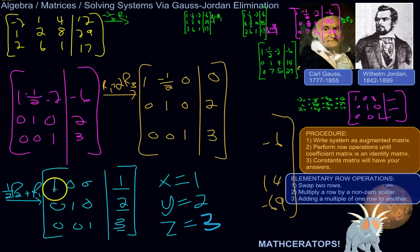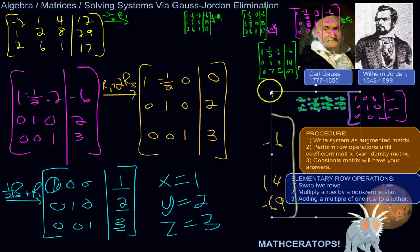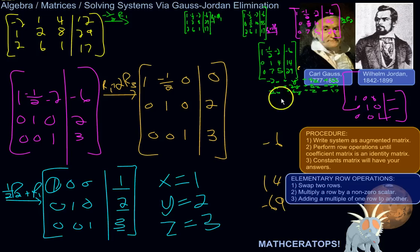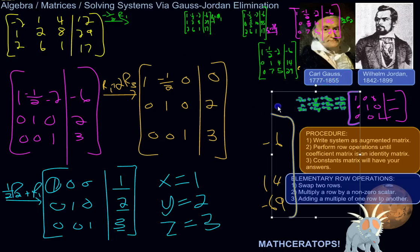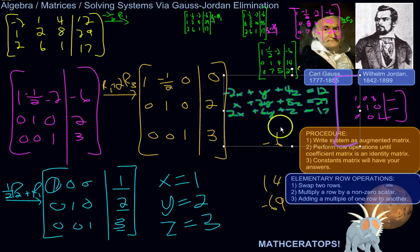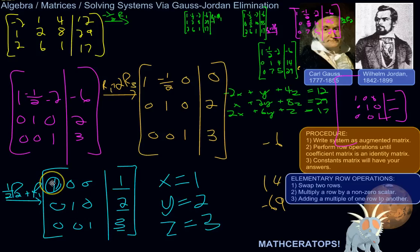Because this is the coefficient of x where we started. This column was the x's. This is saying basically 1 times x plus 0 times y plus 0 times z equals 1, so x is 1. 0 times x plus 1 times y plus 0 times z is 2, so y is 2. So x is 1, y is 2, z is 3. That is the Gauss Jordan elimination method.